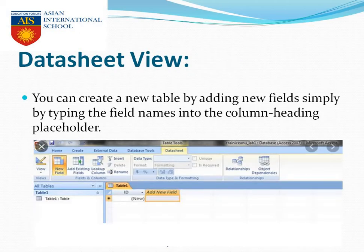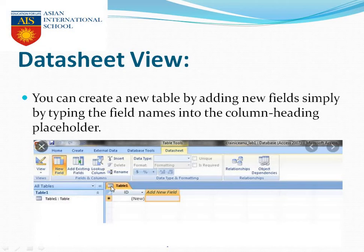In datasheet view, after opening you will go to the datasheet view, click on add new field — or there is also the option to add existing field. You can add your new field here. Table 1 is already existing. If you want to add one more table, click here and it will create another table. You can add your table over here — there is no issue adding a table to your database.